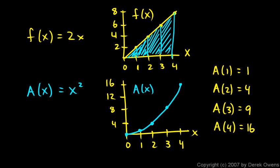Now one thing that you've hopefully seen in all of these examples is that in every case, the area function is the antiderivative of the original function. And you can see here that x squared is the antiderivative of 2x. And let's just look through the earlier examples real quick.